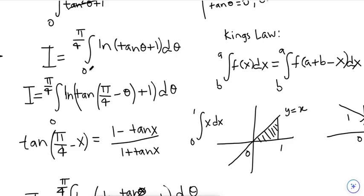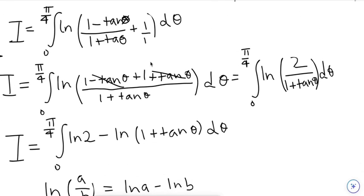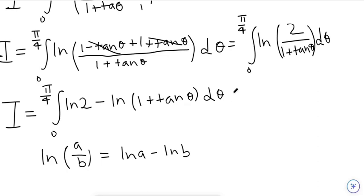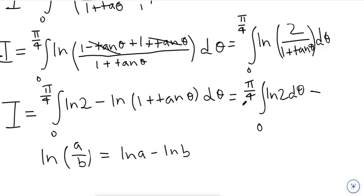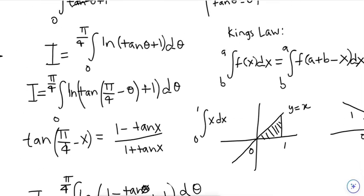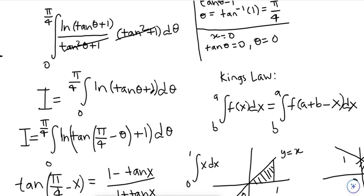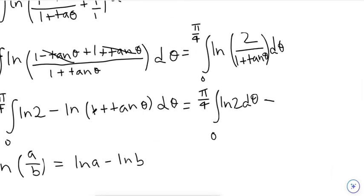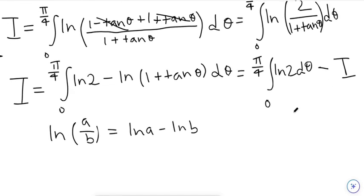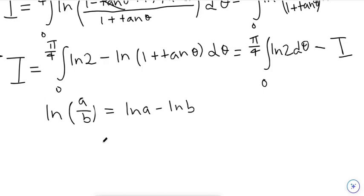Recall that I is the integral from 0 to π/4 of ln(tan(θ) + 1) dθ. We now have I = the integral from 0 to π/4 of ln(2) dθ minus the integral from 0 to π/4 of ln(1 + tan(θ)) dθ — and that second integral is just I again.